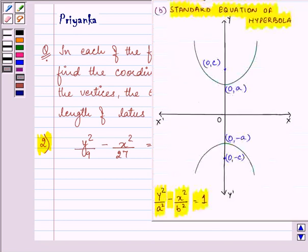Now, we have the standard equation of hyperbola where the foci are on y-axis with foci F1 and F2. This is F1 and this is F2 and vertices V1 and V2, that is 0, plus minus a and foci are 0, plus minus c.